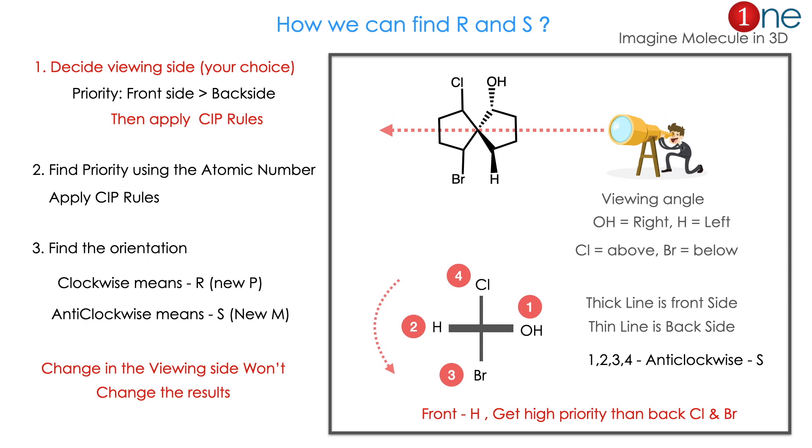How we can find R and S? The important thing you have to do is first choose the viewing side - the viewing side is the angle you see from that direction. Then you have to choose the priority. If you look at the priority, front side gets higher priority than back side.